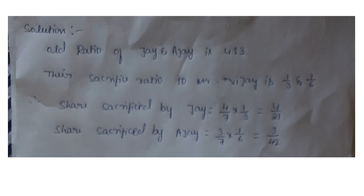J is to sacrifice first. Based on the old ratio of 4:3, J's sacrifice is: 4/7 × 1/3 = 4/21. So J's sacrifice ratio is 4/21.